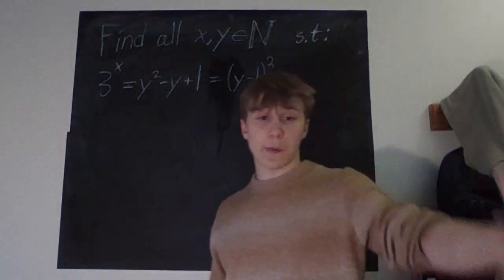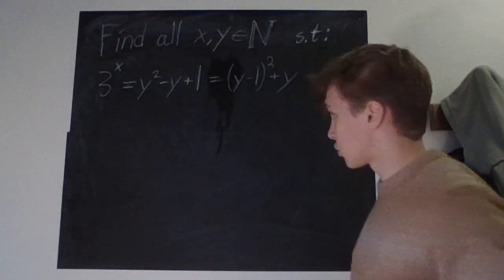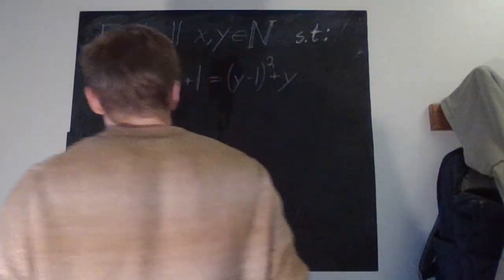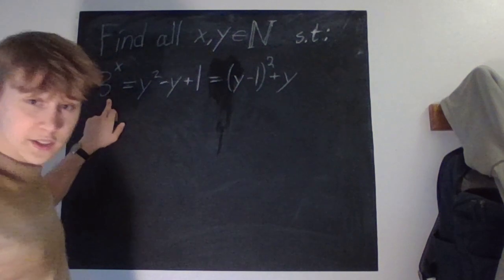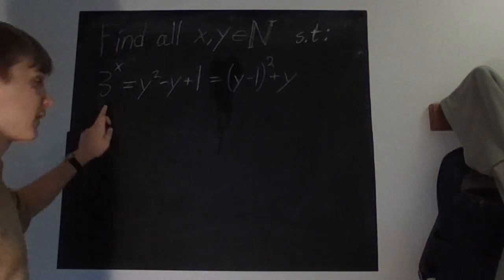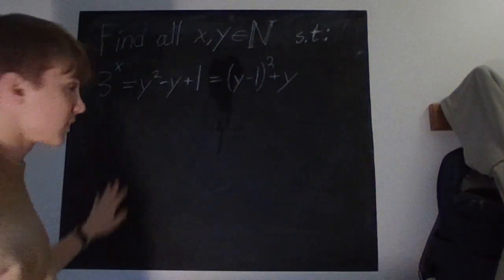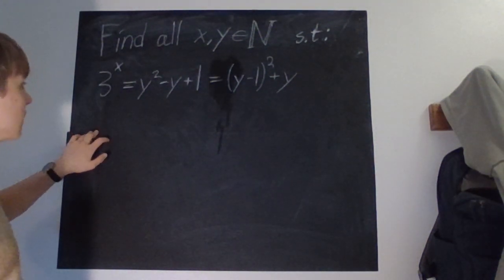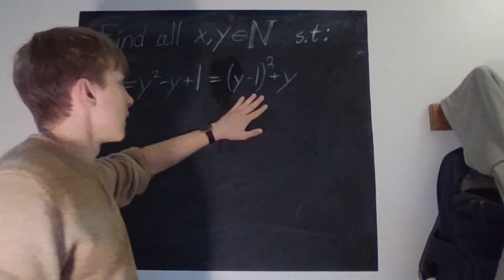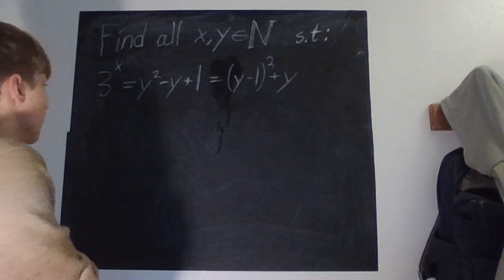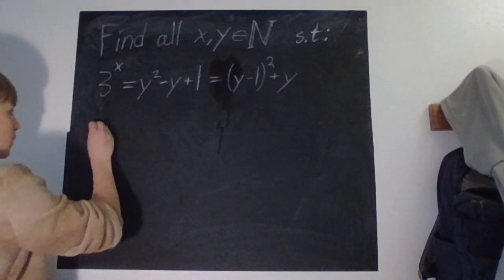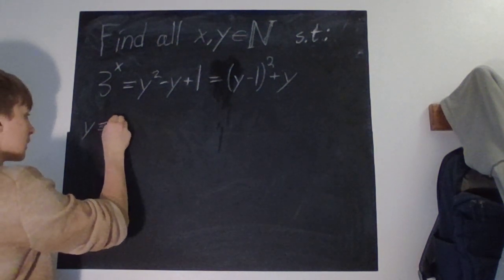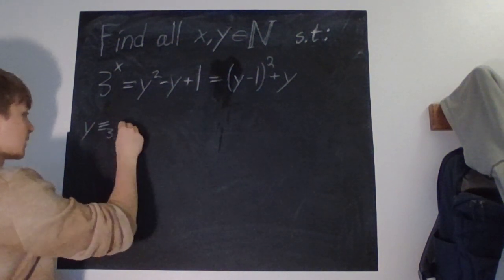So what do we do now? Well, a good trick is modulus. We know that 3 to the power of x, modulo 3, is obviously 0, it's divisible by 3. So then we'll just try all the cases of y. We have the first one, where y modulo 3 is 0.